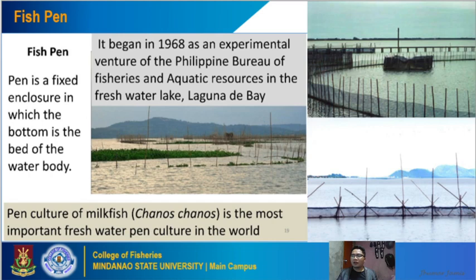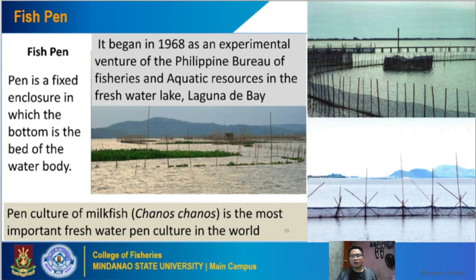Next are fish pens. Fish pens are fixed enclosures where the bottom is the bed of the water body, which makes them different from fish cages. Fish pens began in 1968 as an experimental venture in the freshwater lake of Laguna de Bay in the Philippines, using wood stakes, wood sticks, or bamboo stakes. The first species cultured in fish pens was milkfish — this is the most important freshwater pen culture in the world.